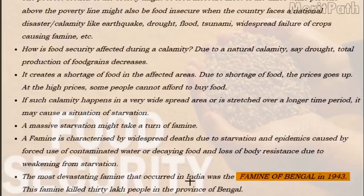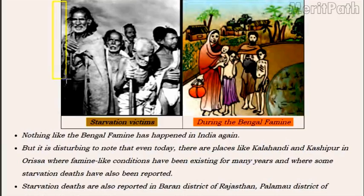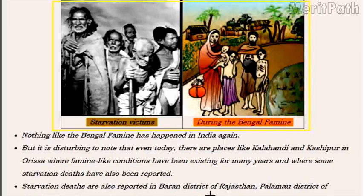Famine is characterized by widespread deaths due to starvation and epidemics caused by forced use of contaminated water or decaying food and loss of body resistance due to weakening from starvation. The worst famine in Indian history was the Bengal famine that hit the Bengal province of British India in 1943, killing 30 lakh people. But even today, deaths are often reported from Kalahandi and Kashyapur in Orissa, Baran in Rajasthan and Palamau in Jharkhand.